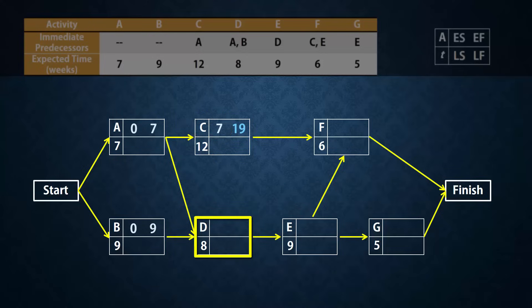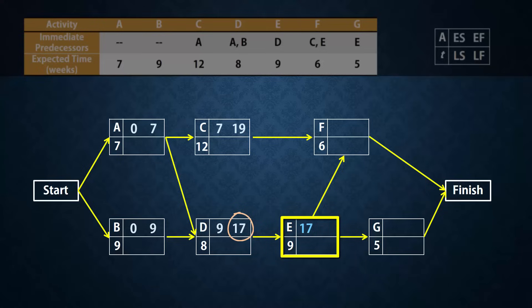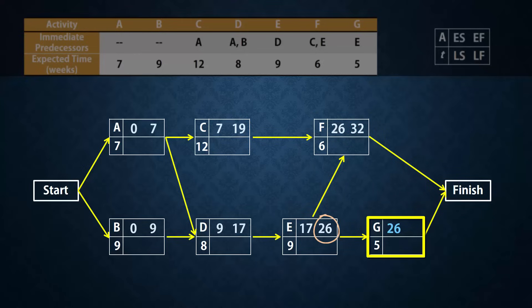D needs both A and B to finish before it can start. Since the earliest finish times for A and B are 7 and 9 respectively, and D needs both of them to finish in order to start, the earliest time D can start is 9. The highest of the earliest finish times preceding an activity will be the activity's earliest start time. So D finishes at 8 plus 9, which gives 17. E has only one predecessor D, and so can start at 17 and finish earliest at 26. F has predecessors C and E. Since the higher earliest finish time is 26, F can start earliest at 26 and finish at 32. G also can start earliest at 26, since it has only one predecessor E, and G can finish earliest at 26 plus 5, which gives 31.